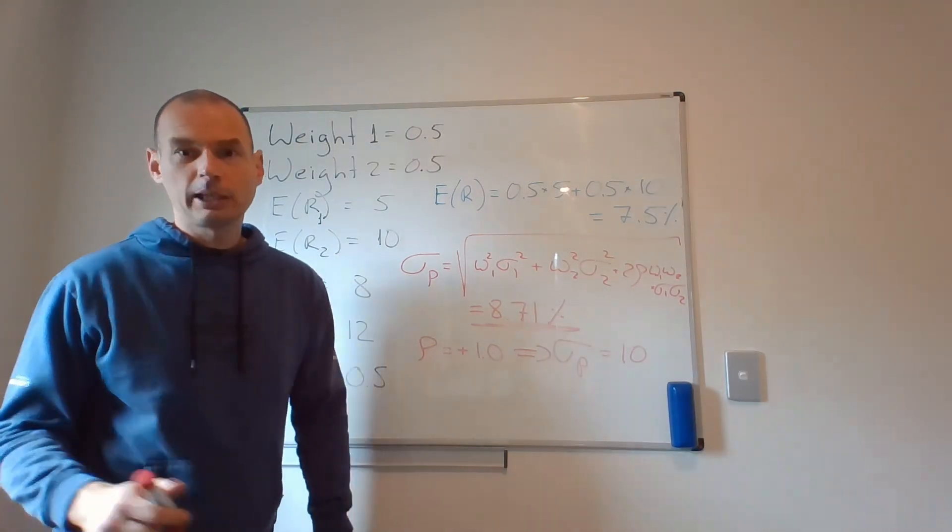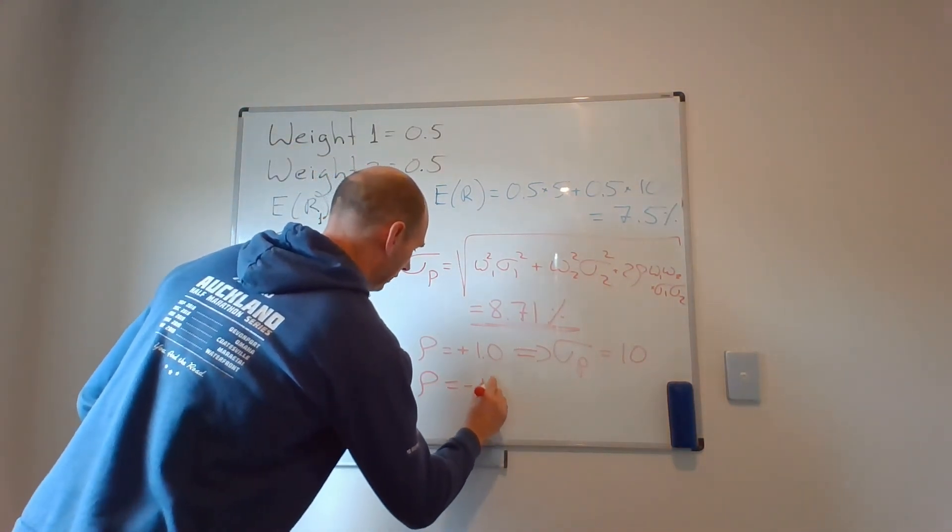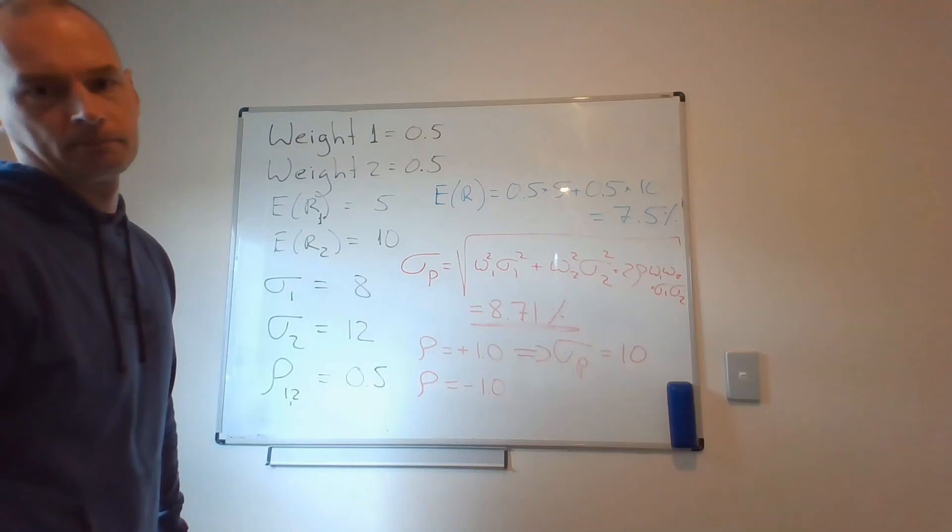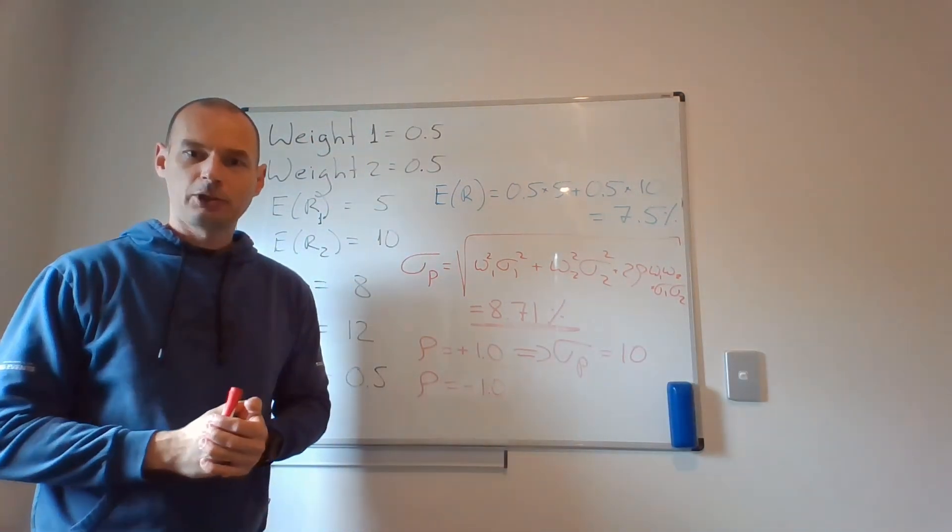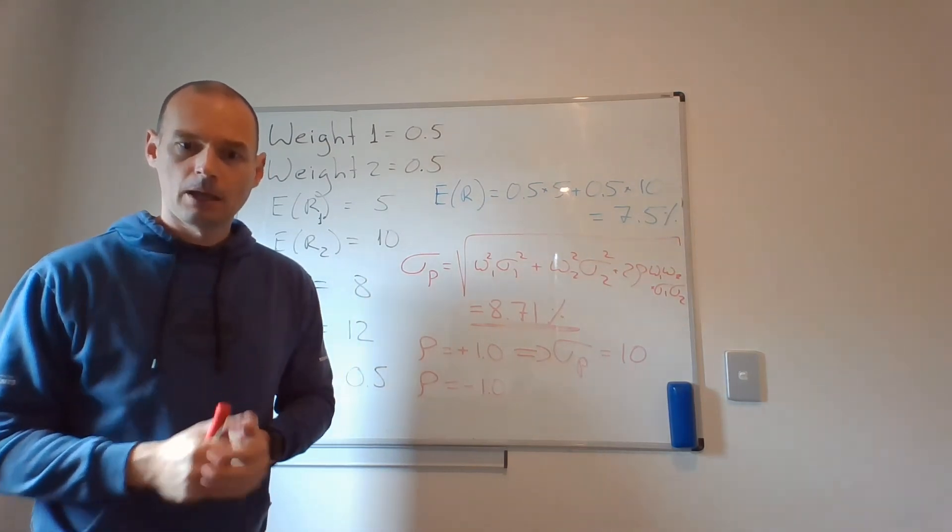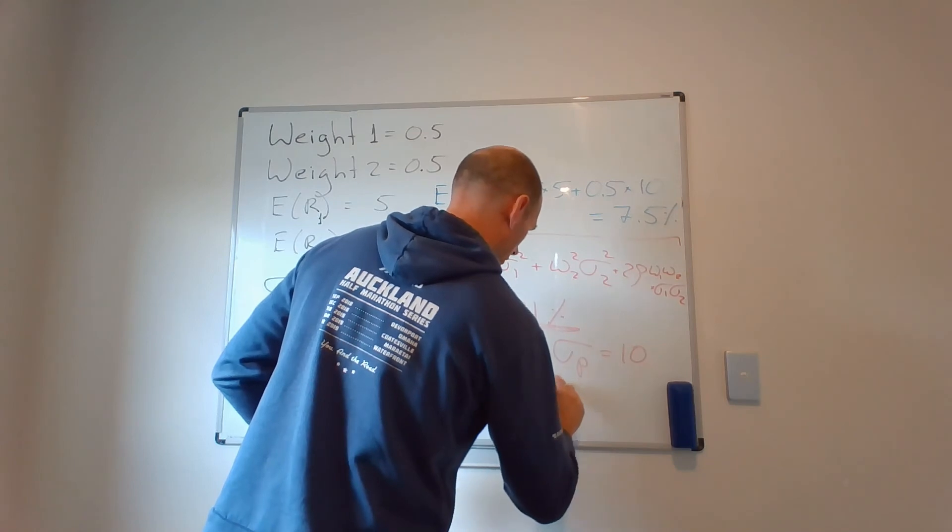What is my best-case scenario? My best-case scenario is when my correlation coefficient is negative 1. That's when they basically move against one another, canceling each other's volatility. And again, take my word for it. You can check it yourself.